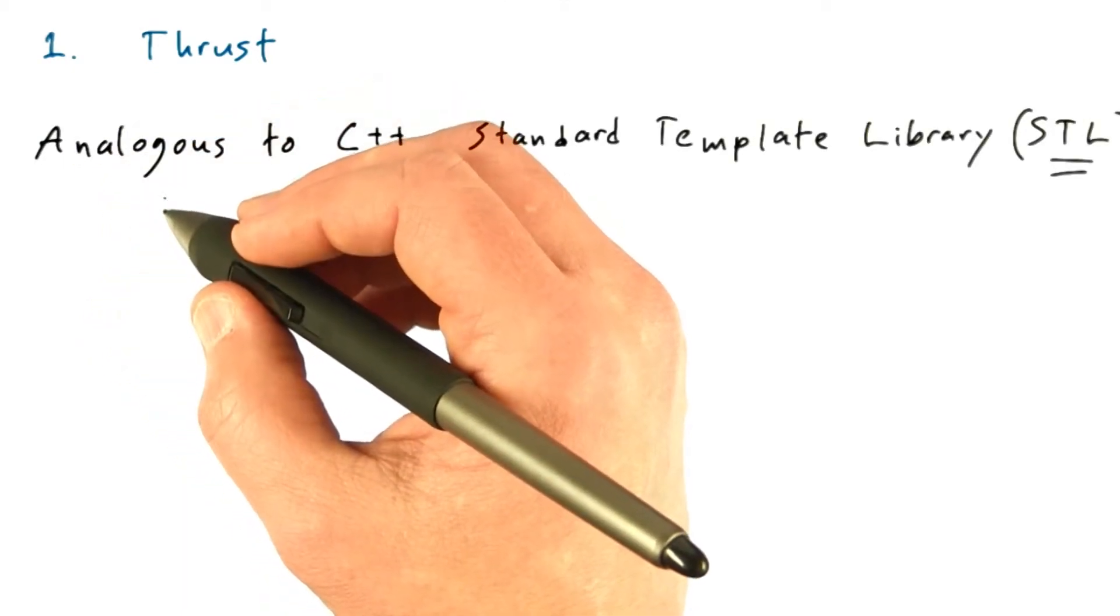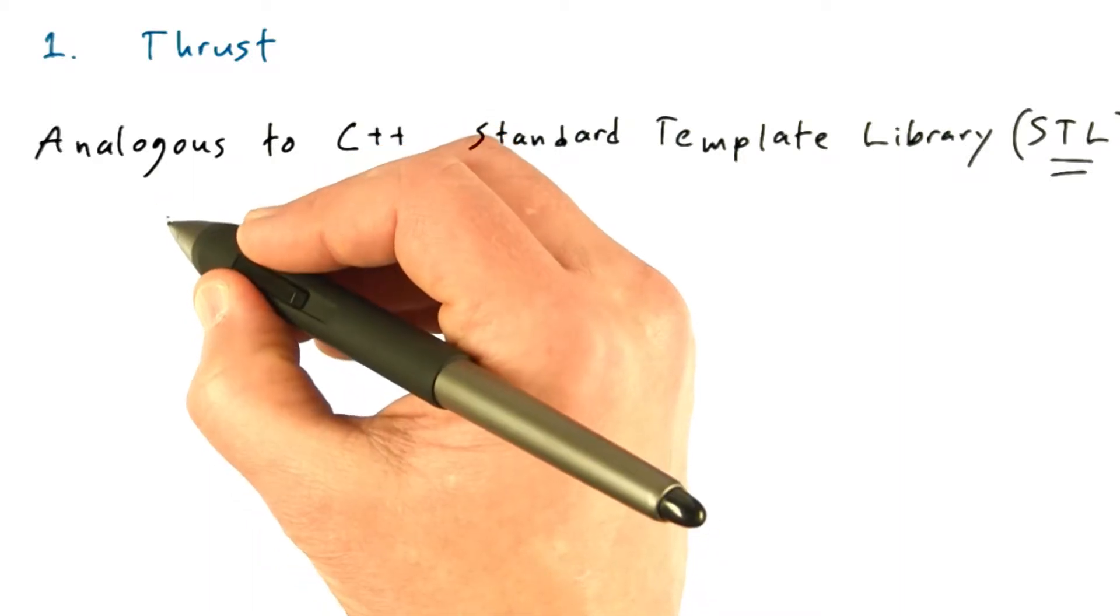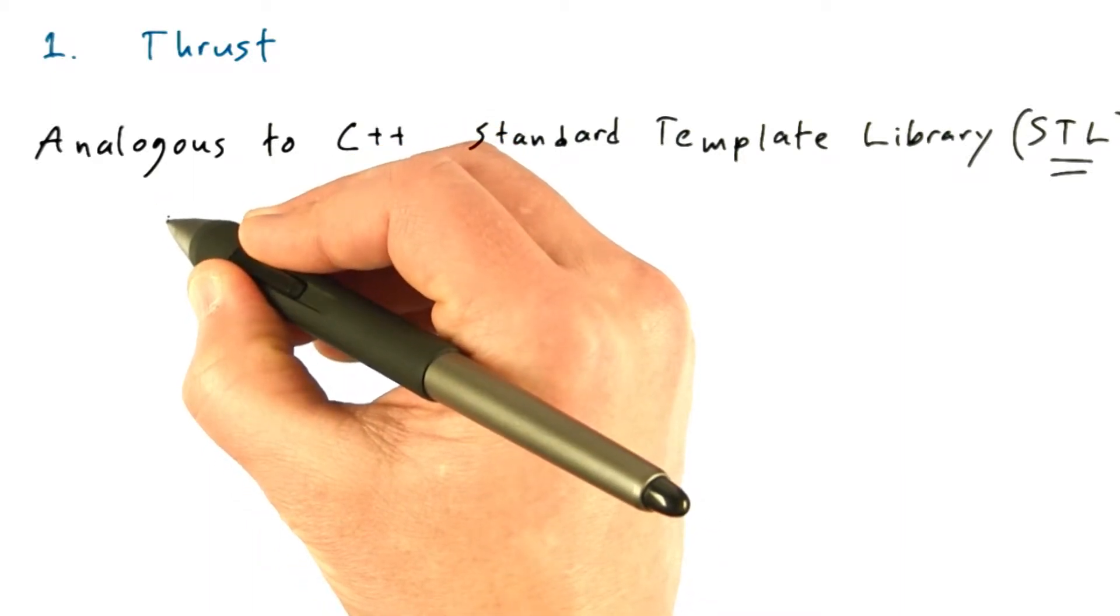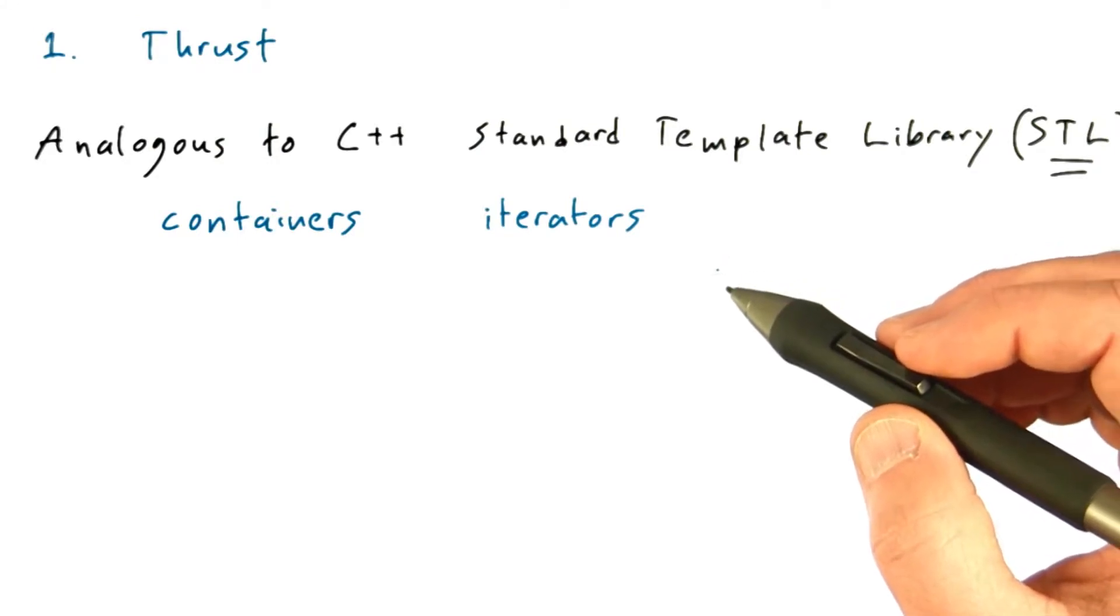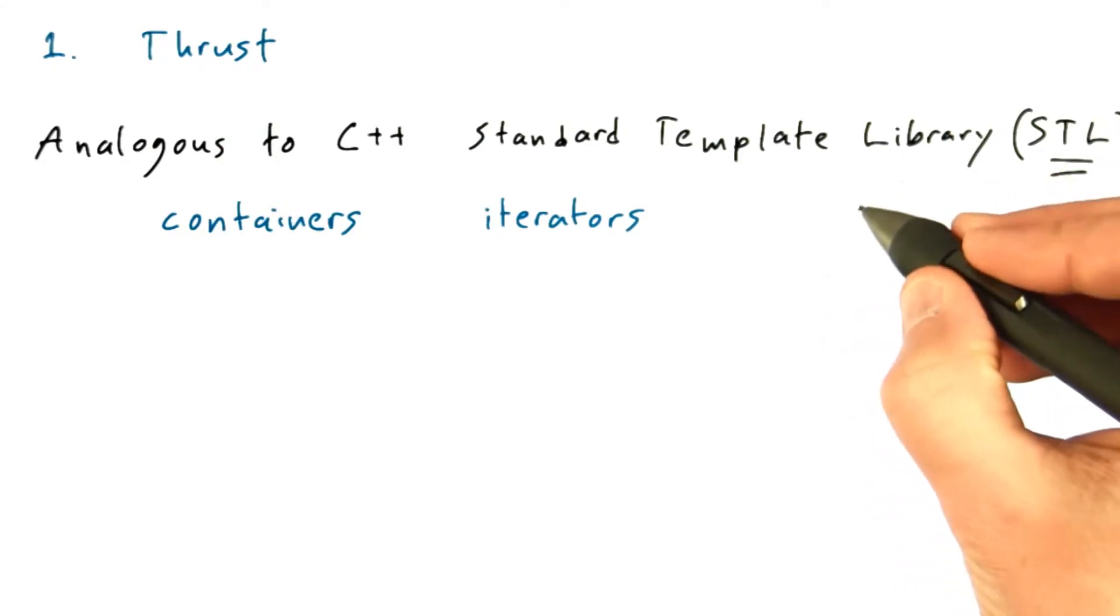STL provides a set of incredibly useful abstractions that are organized into containers and iterators. Thrust provides a data parallel analog to the STL for CUDA, and also borrows niceties from the popular Boost library.